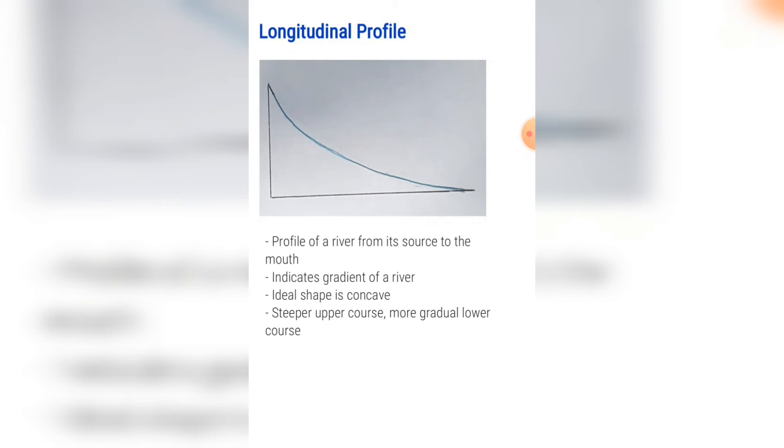The longitudinal profile indicates the gradient of a river and the ideal shape is a concave shape with a very steep upper course and a more gradual lower course.